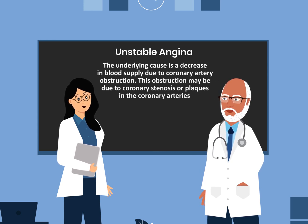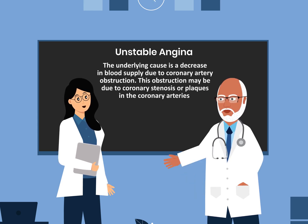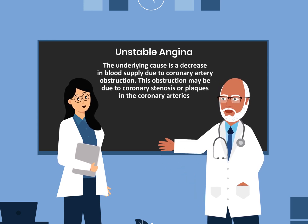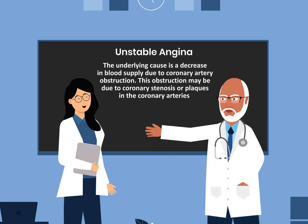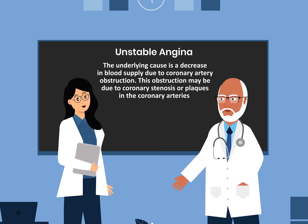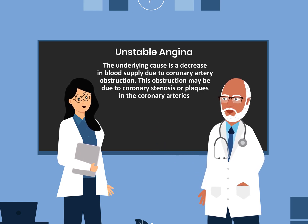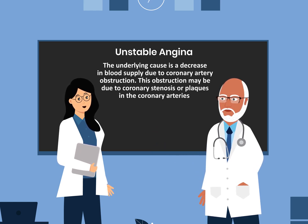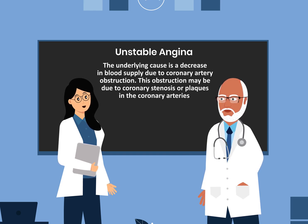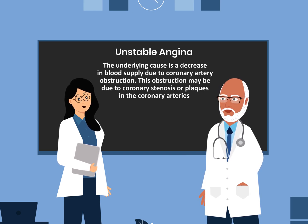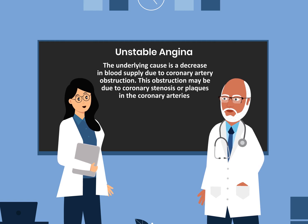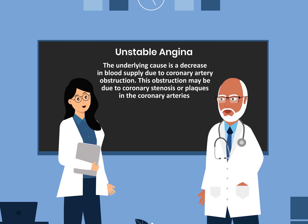What is the underlying cause of unstable angina? The underlying cause is a decrease in blood supply due to coronary artery obstruction. This obstruction may be due to coronary stenosis or plaques in the coronary arteries.